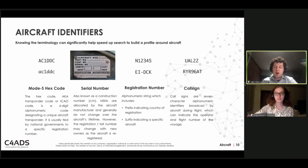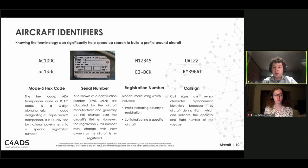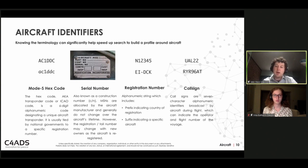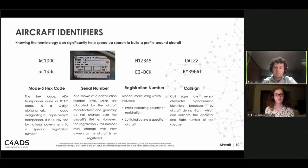Finally, the call sign is an identifier the aircraft transponder sends while in flight and often includes information on the operator. For example, UAL 22 means United Airlines Flight 22 — UAL being the IATA code for United Airlines. RYR 96AT would be Ryanair flight 96AT. The call sign allows you to quickly guess the operator of an aircraft even when you can't find that information elsewhere.